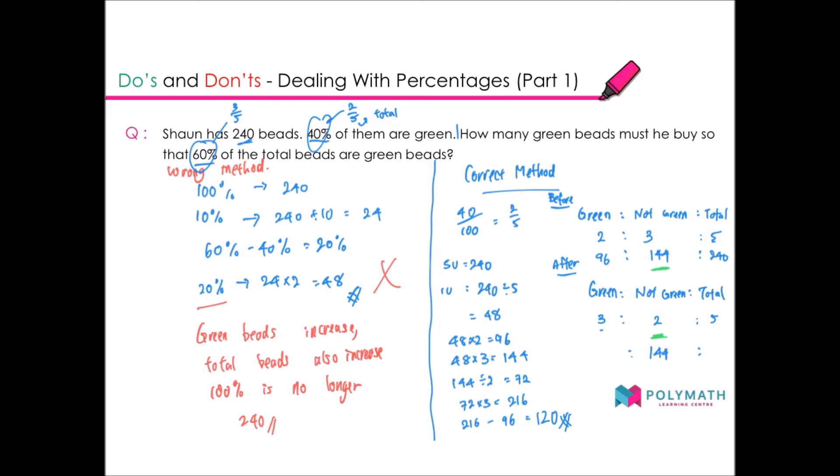You can see that the answer is greatly different. The answer for the wrong method is 48 and the answer for the correct method is 120. This question is a very good question to show you that if you do the percentage method, there will be a lot of mistakes. Because the percentage is second nature to some students to think that they can just add 20% to the green beads, and that will be the answer. But they forgot that if you add green beads, the total wouldn't remain as 240, then your 10% wouldn't be the same amount anymore.